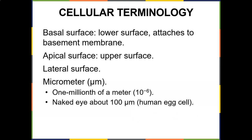100 micrometers corresponds to the size of the human egg — so females, you can actually visually see the egg with the naked eye, though you'd need pretty good eyesight, around 20/15 to 20/20. 100 micrometers is the smallest that humans can see with the naked eye, meaning without the assistance of microscopes.